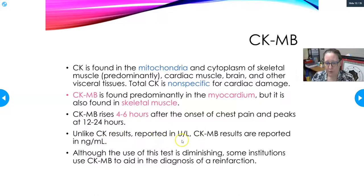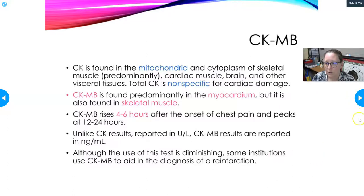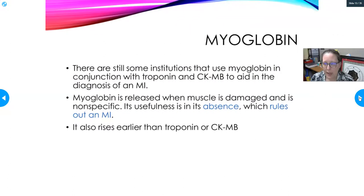Unlike CK results reported in units per liter, CK-MB is reported in nanograms per mL. Although its use is diminishing, some institutions still use it, and one of its values is in diagnosing reinfarction — a second heart attack or second blockage. The third test sometimes used as part of the cardiac panel is myoglobin, with some institutions using myoglobin alongside CK-MB and troponin to assist in diagnosing acute MI.